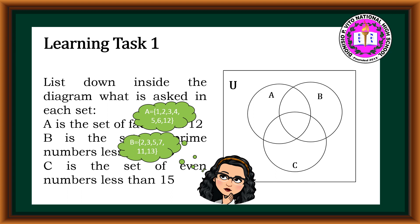C is the set of even numbers less than 15. An even number is any number that can be exactly divided by 2. Therefore, the set of even numbers less than 15 are 2, 4, 6, 8, 10, 12, and 14.